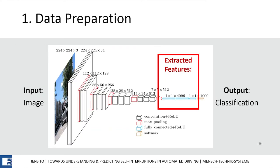VGG16 is a deep convolutional neural network which has shown to be highly effective in extracting relevant features from images and classifying them. At the end are one flattened, two fully connected, and a classification layer. Since I need the features and not the classifications, I used the output features from the flatten and the two fully connected layers.